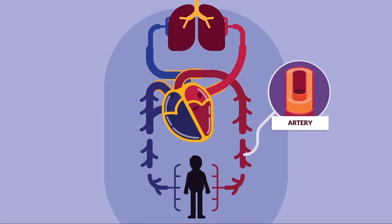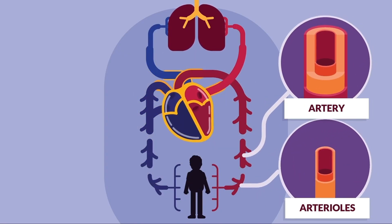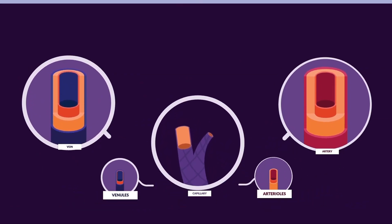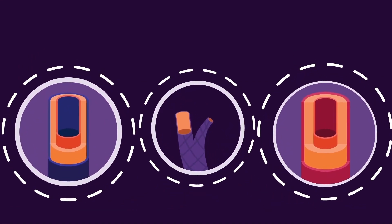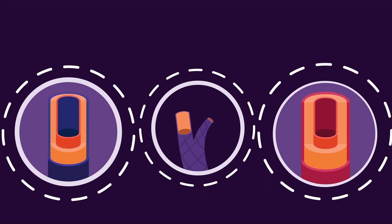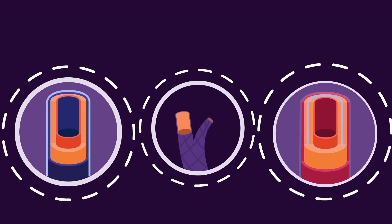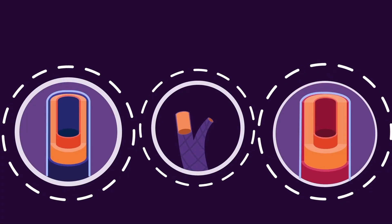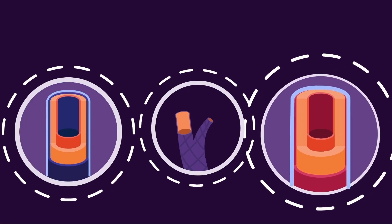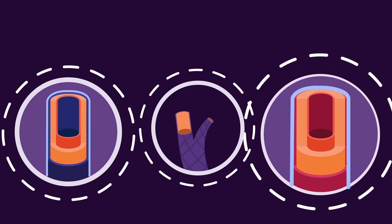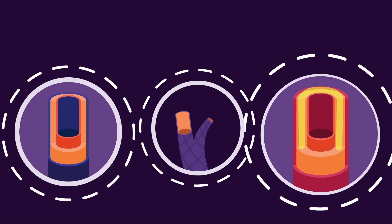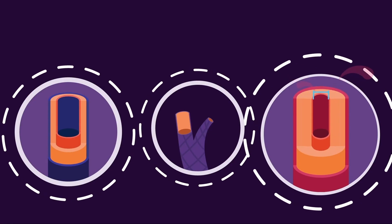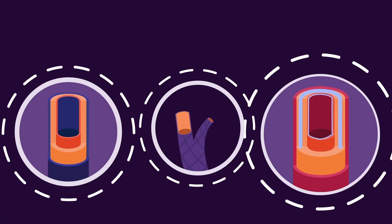The blood vessels consist of arteries, arterioles, veins, venules, and capillaries. When we do a cross section of arteries and veins, we can see that both have common structures like an outer wall, elastic muscle, and a lumen in the middle. The differences are that in arteries, the outer wall is thicker and firmer than in veins — it retains its shape when pressured by blood flow — while also having a smaller lumen, and the elastic tissue of arteries is thicker.